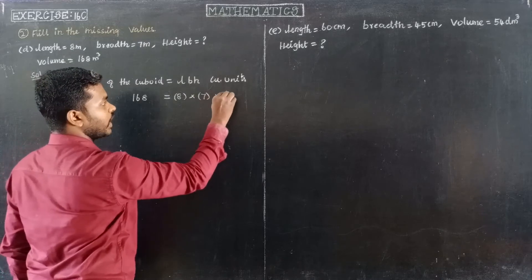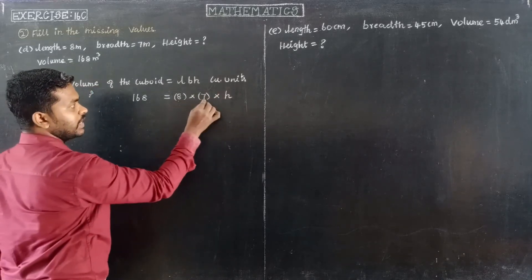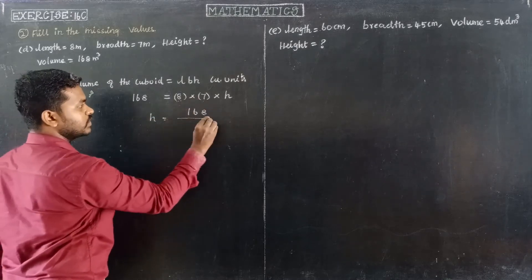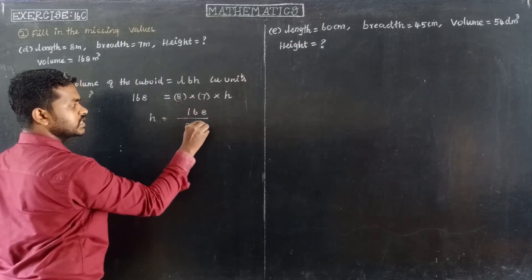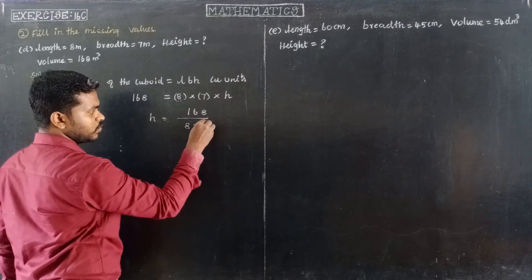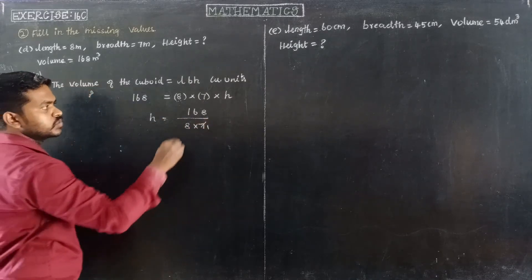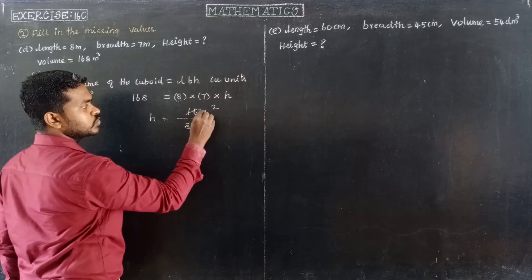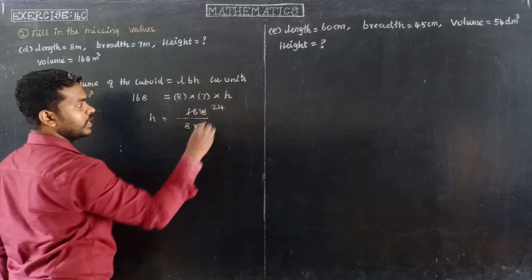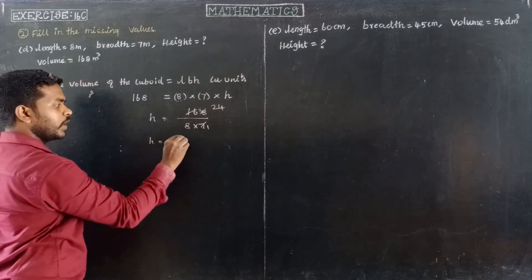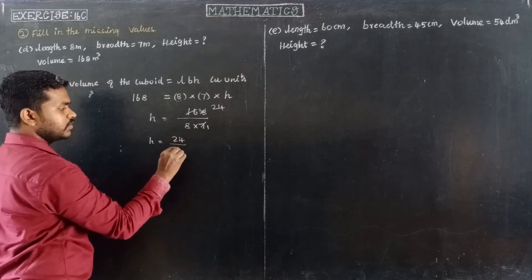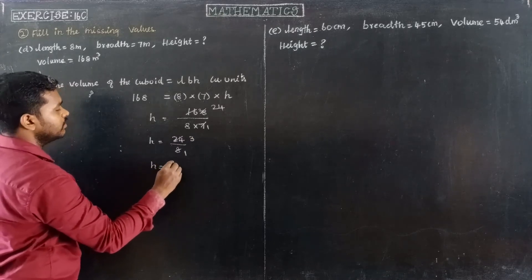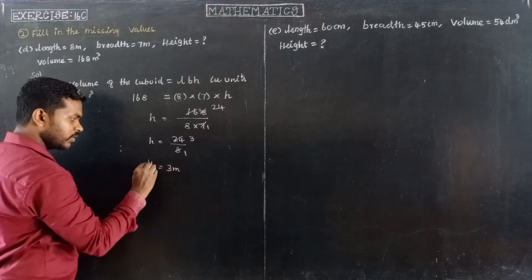So height is equal to 168 divided by 8 into 7. So 8 into 7 — cancel: 7 ones are 7, and 168 divided: 3 eights are 24. Therefore, height of the cuboid is 3 meters.